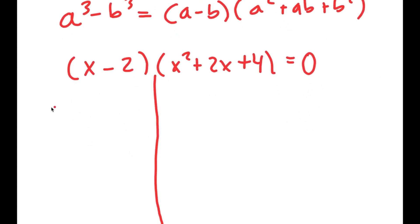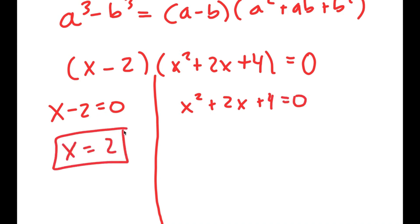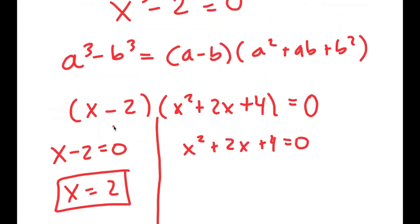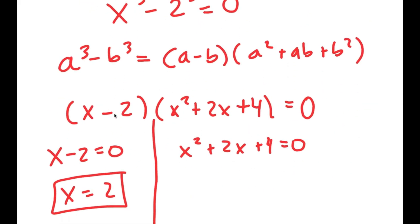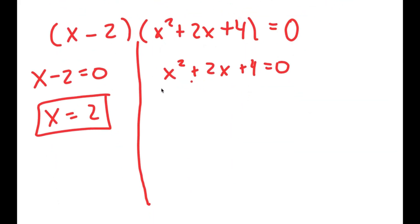Now I get two equations: x minus 2 equals 0, and x squared plus 2x plus 4 equals 0. For x minus 2 equals 0, I get x equals 2, which was the solution we already found. But on top of this, we have a whole other equation with two more solutions because it's a quadratic equation.